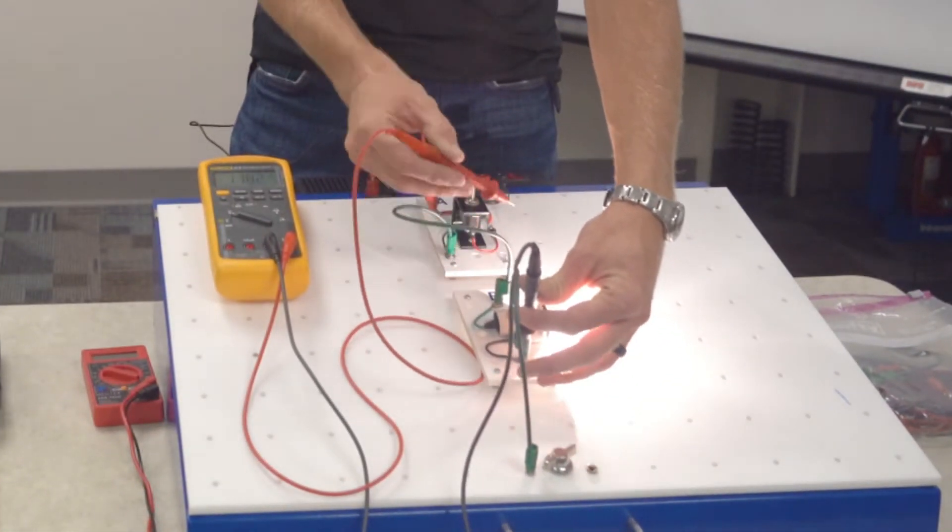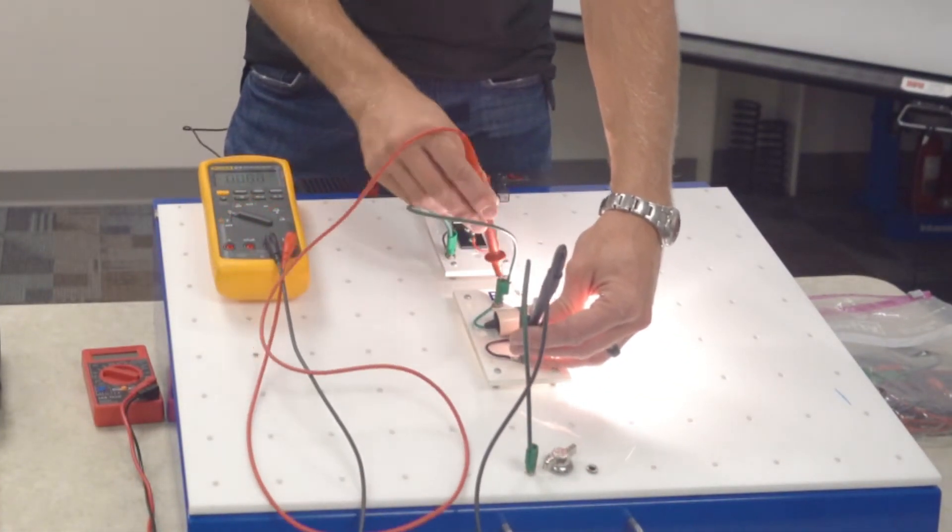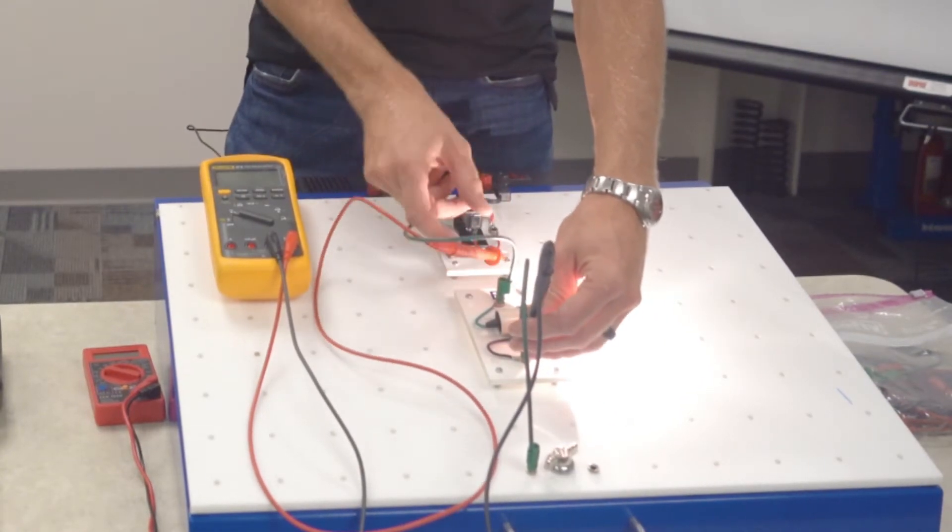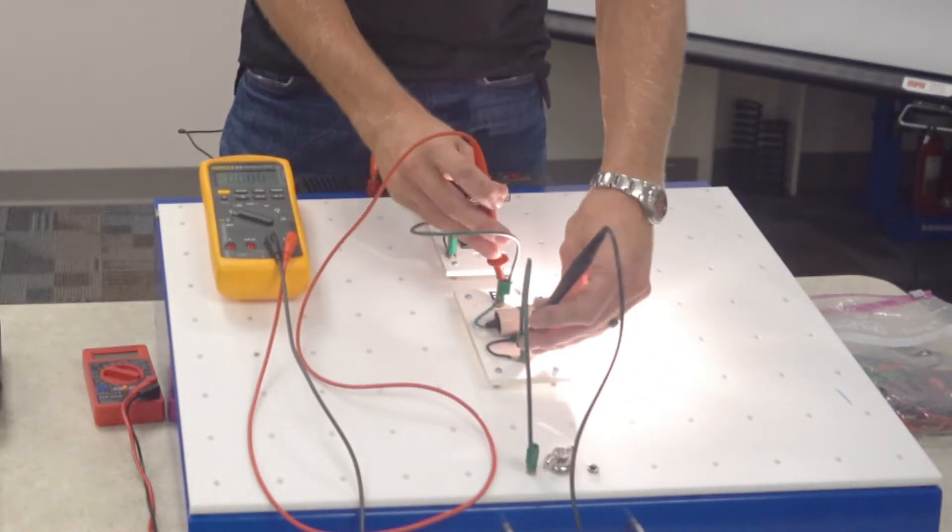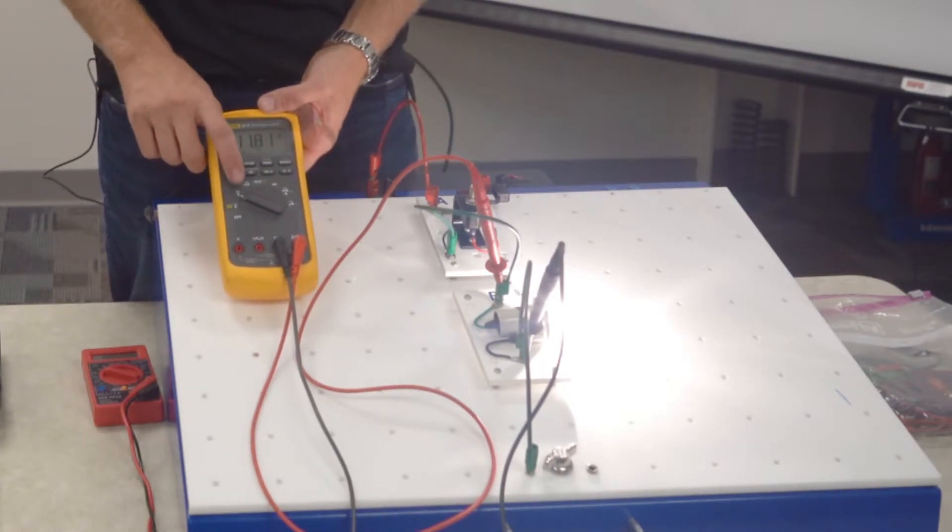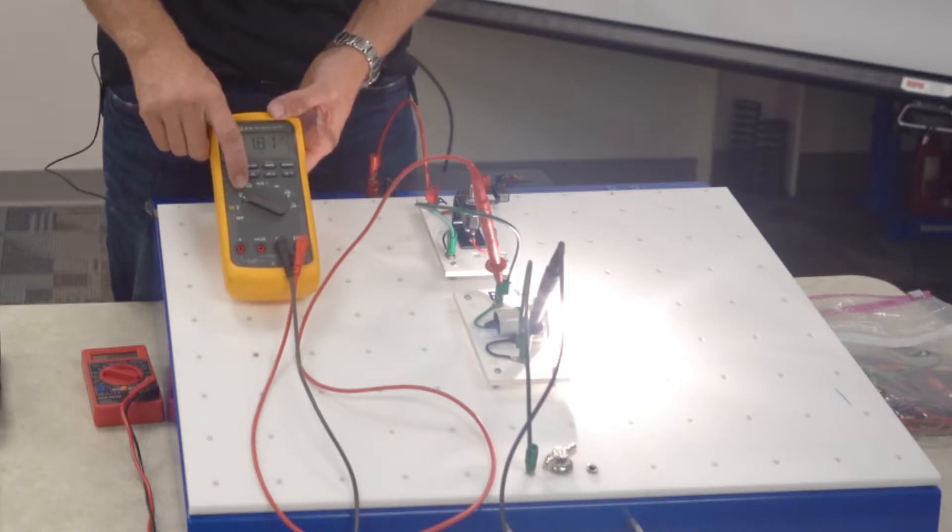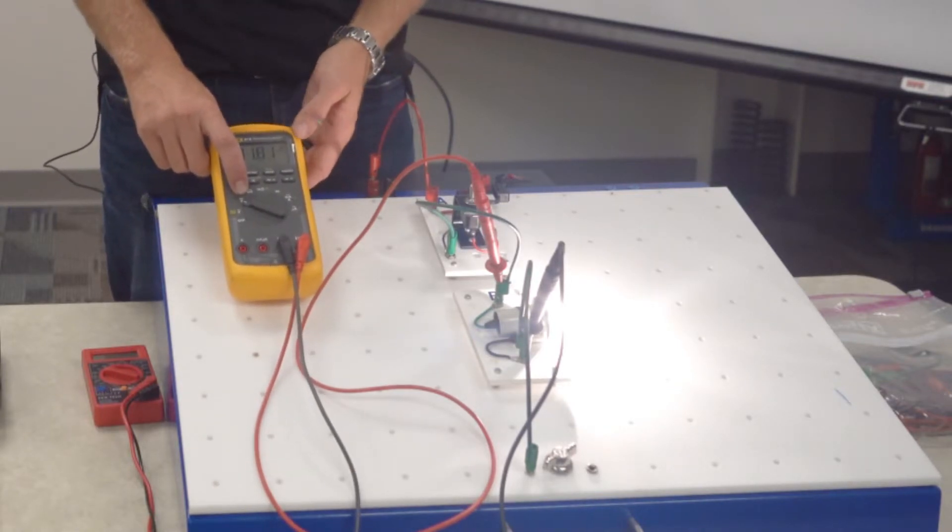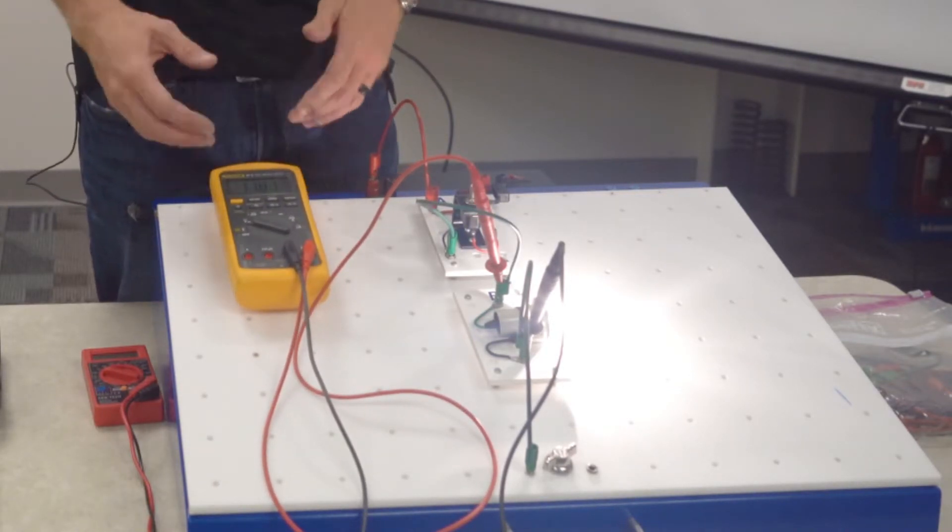So there's how you measure it at the source. It's simply taking your positive lead and putting it before the component and taking your negative lead and putting it after the component. As far as my meter setup, this meter is pretty easy because it's auto-ranging. I'm in DC volts and it's auto-range so it's going to pick up whatever voltage we're actually measuring.